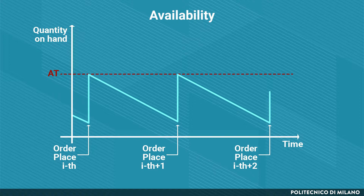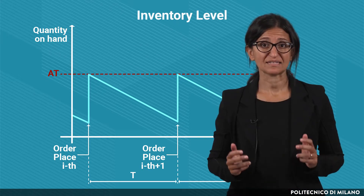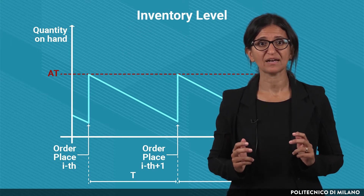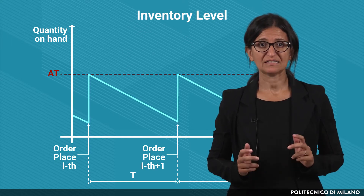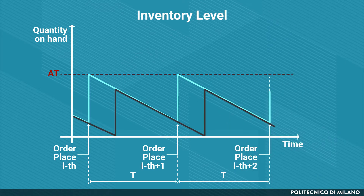The order quantity is always equal to the difference between the current availability and the availability target. Then there is a progressive decrease of the availability, until the moment in which the next order is issued, after a fixed time interval t. Therefore, the minimal expected value of the availability is equal to the availability target minus the expected demand in period t. Now let's analyze the expected inventory level in the warehouse, intended as the physical quantity on hand. The expected path of the inventory level is the same as the availability, but shifts both horizontally and vertically.